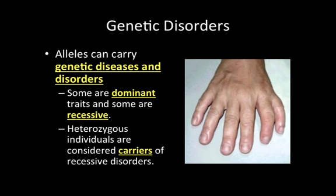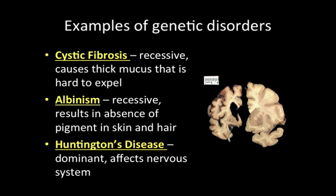If you look at the individual on the right, this person has six fingers instead of five. This is called polydactyly. Polydactyly is a genetic disorder where you develop extra digits, such as fingers or toes. It's really not a life-changing genetic disorder, but it is one that is abnormal and does not occur very frequently in the population.